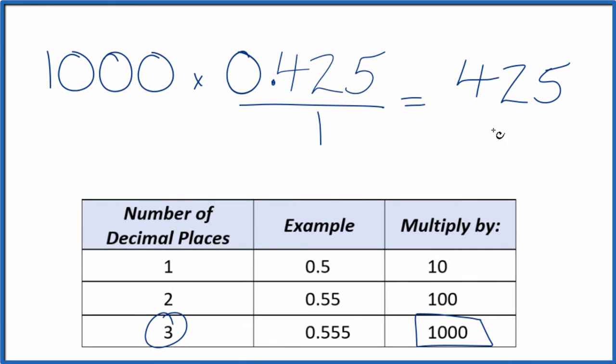So now we have a whole number. But we can't just multiply the numerator here by 1,000. We need to multiply the denominator by 1,000 as well. That's because 1,000 over 1,000 is just 1. We're multiplying by 1, we don't change the value, just the way it's represented.